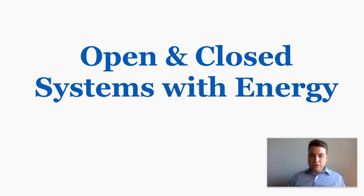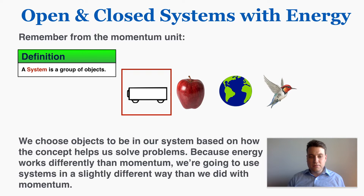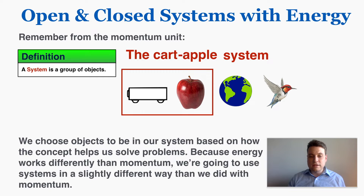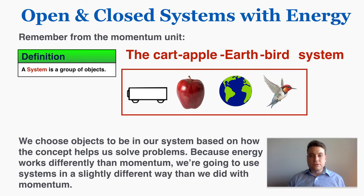This lecture is going to be about open and closed systems in energy, which work a little bit differently than open and closed systems in momentum. You will remember from the momentum unit that a system is a group of objects, and we can choose objects to be in our system based on how the concept helps us solve problems. Because energy works differently than momentum, we're going to use systems in a slightly different way, with different rules for when energy leaves a system as opposed to when momentum leaves a system.